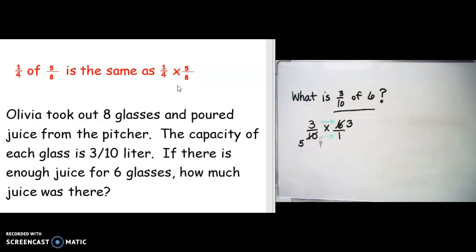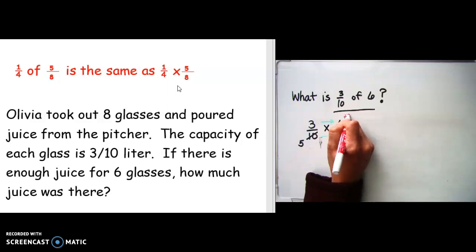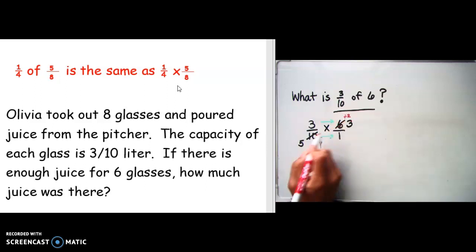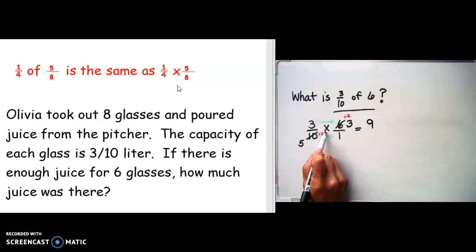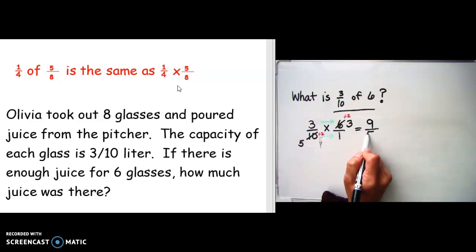So what I did here is I divided six by two and got three, and ten by two and got five. Now I can multiply three times three, which is nine, and five times one, which is five.